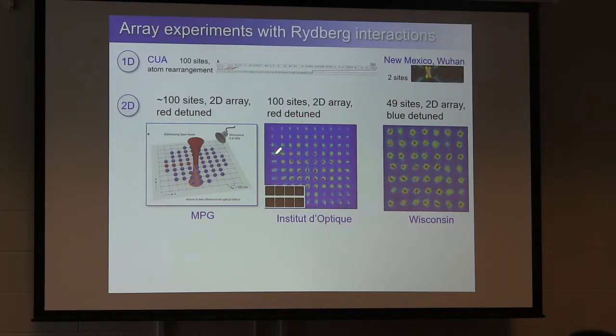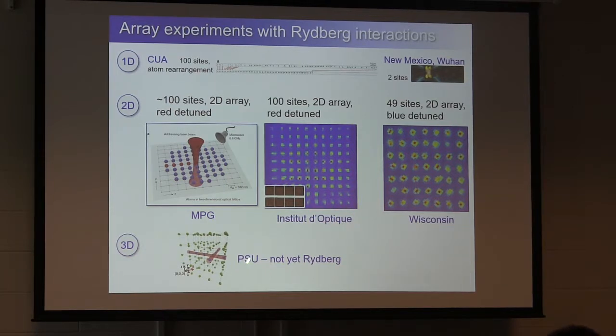There's a couple 2D experiments. There's the Munich experiment, what we heard from Thierry this morning, also with the atom rearrangement, and our 49-site experiment in Wisconsin. And then there's also progress towards 3D. So Dave Weiss has been doing very nice single qubit gates in a 3D lattice, not yet Rydberg, but I know he's interested in adding that to this experiment at some point.